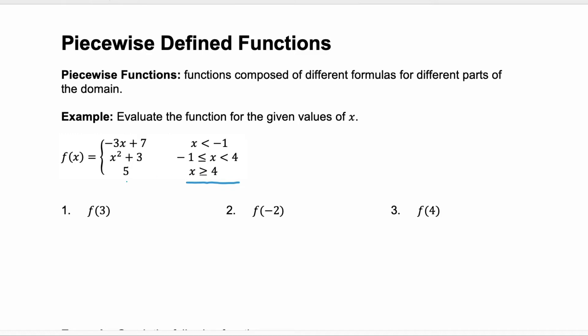So when you go to evaluate a function, such as f of 3, first you need to find out which piece that value of x falls in. So f of 3, remember, is when x equals 3. So when x equals 3, we're in that second piece, so the x squared plus 3. Now you just substitute in the 3 for your x. 3 squared plus 3, 9 plus 3. So f of 3 here is equal to 12.